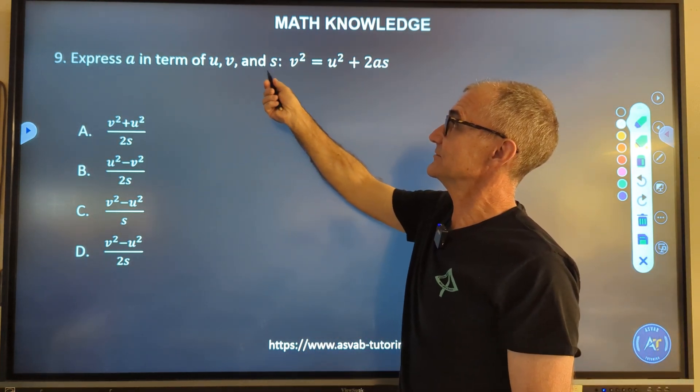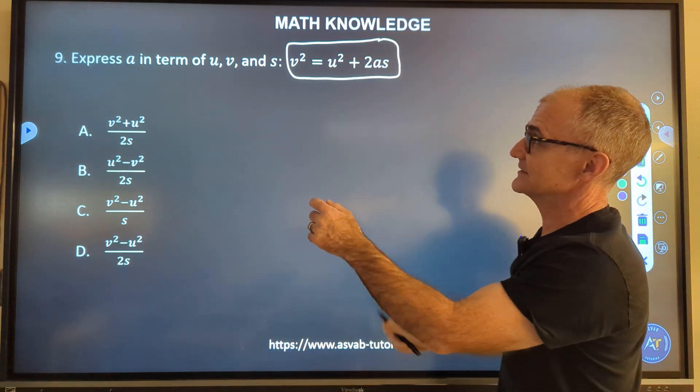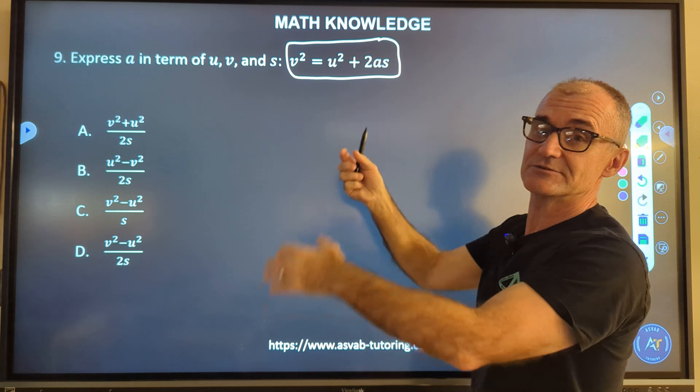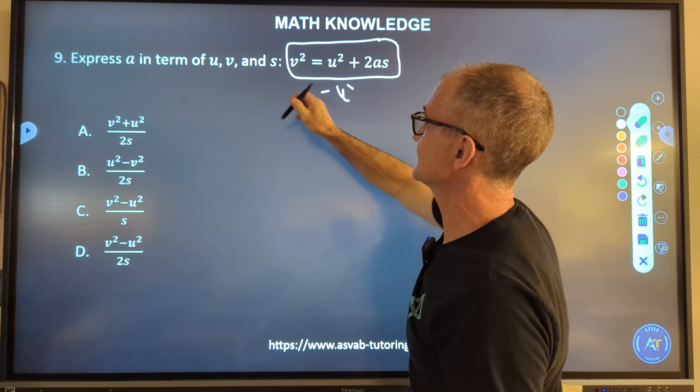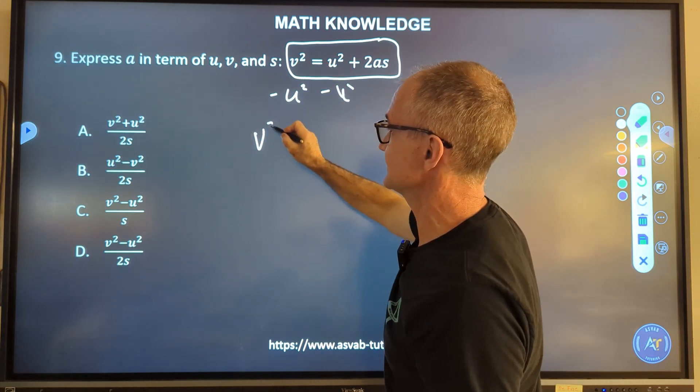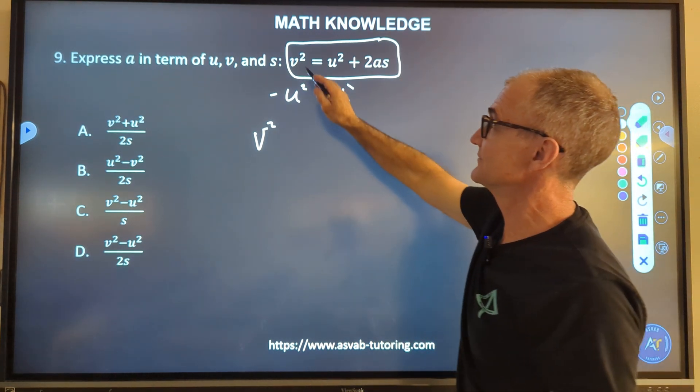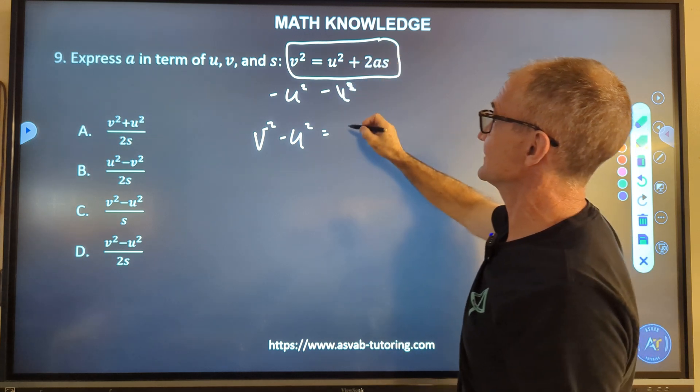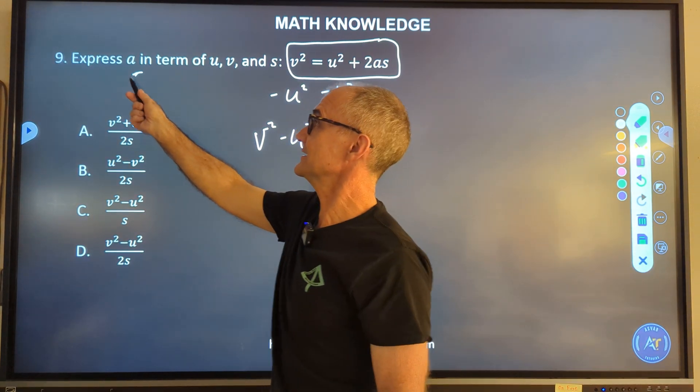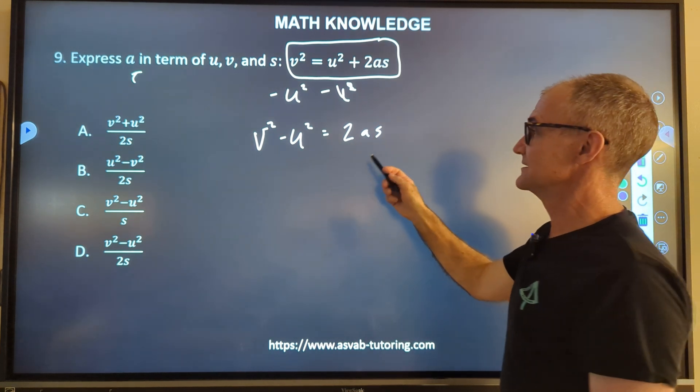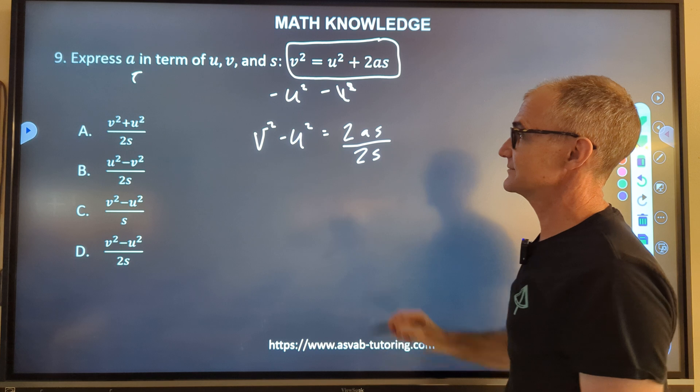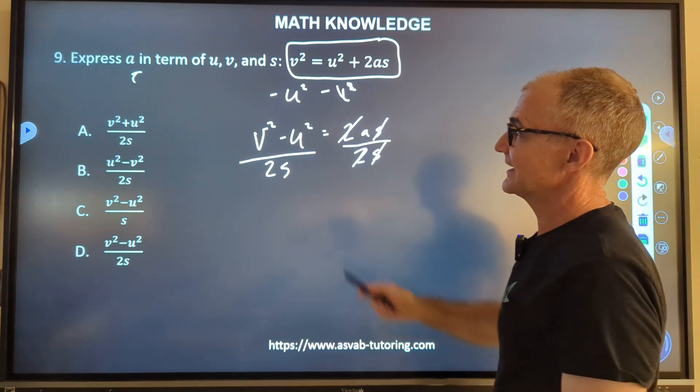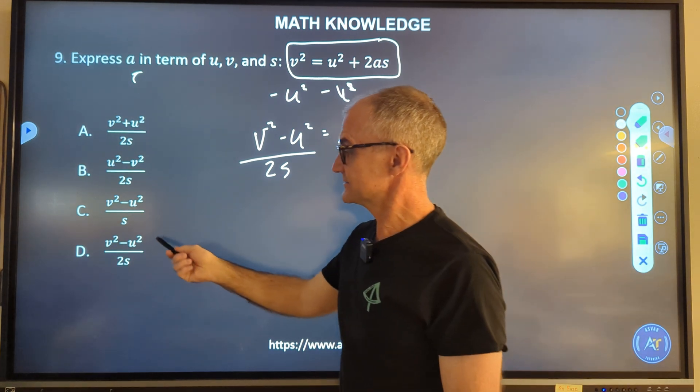Number 9, express a in terms of u, v, and s in this equation. What that's asking me is get a all by itself. So I've got to get a by itself. I'm actually isolating a variable, so I reverse my order of operations. First thing I'm going to do is subtract u squared from both sides. Then I have v squared minus u squared equal to 2as. What am I solving for? I'm solving for a. So I've got to get this a by itself. These operations are multiplication. So I get rid of those by division. I can divide both sides by 2s. I have a by itself. I have v squared minus u squared divided by 2s. Answer D.